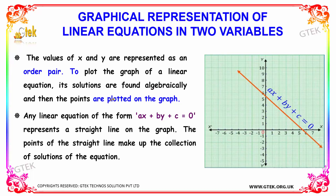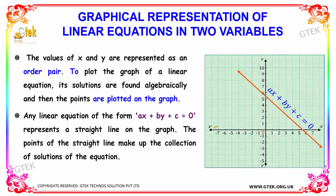The values of x and y are represented as an ordered pair. To plot the graph of a linear equation, its solutions are found algebraically and then the points are plotted on the graph. Any linear equation of the form ax plus by plus c equal to 0 represents a straight line on the graph, and the points of that straight line make up the collection of solutions of the equation.